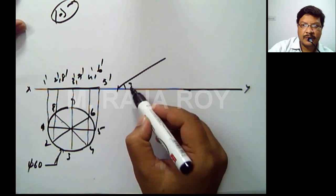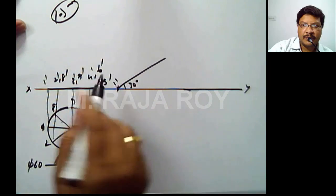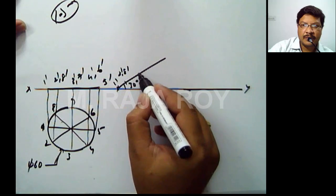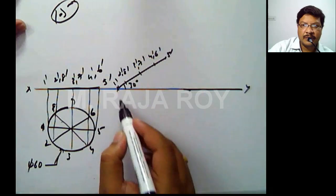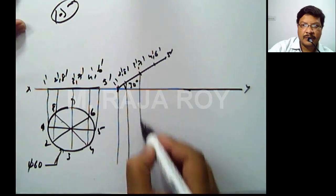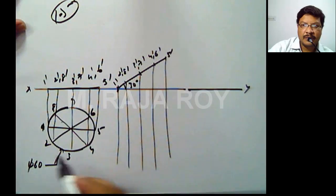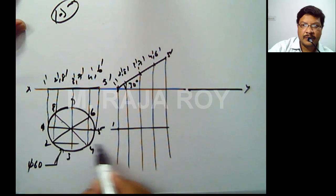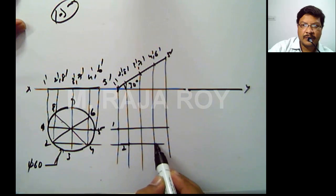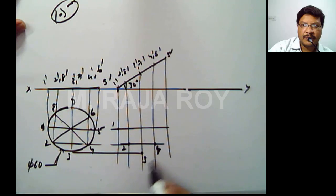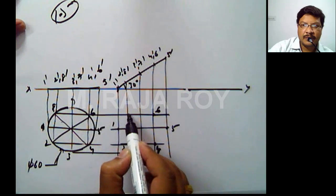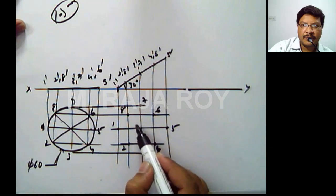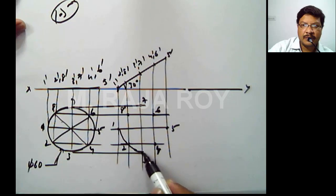Since this particular surface is making 30 degrees with HP, I will draw a 30 degree line and reconstruct the front view. That means 1' is placed, I take this distance and mark it — here 2' and 8', somewhere here 3' and 7', next 4' and 6', and the end point is 5'. Now draw the projectors and draw the locus lines, getting points 1, 2, 3, 4, 5, 6, 7, 8 in the top view. Joining these points gives the top view in the form of an ellipse.